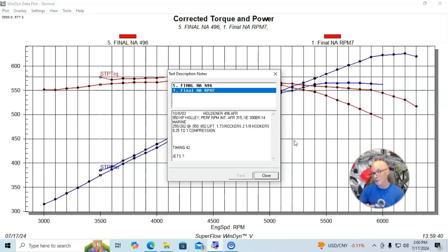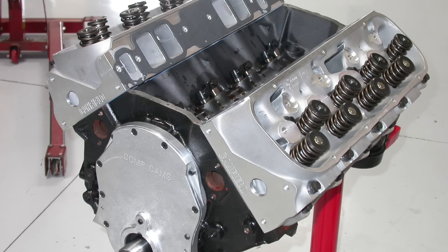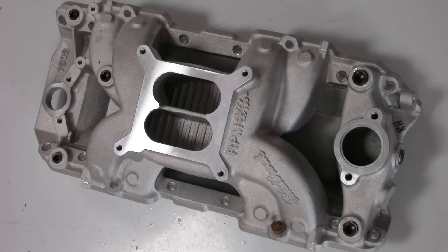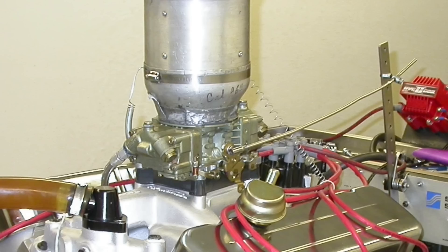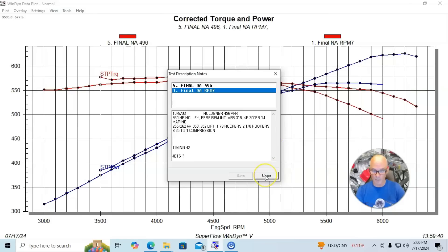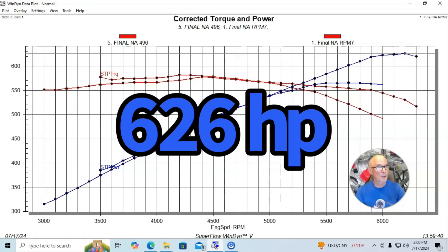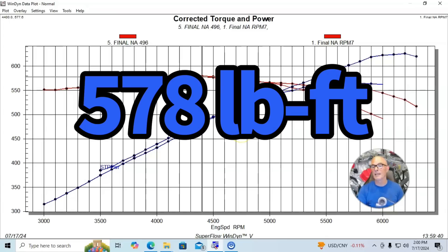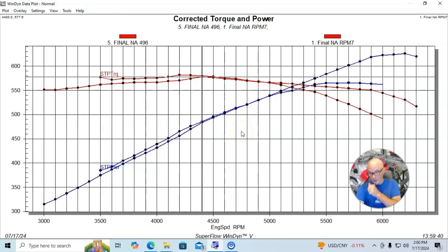We did change the cylinder heads. We stepped up from the 315 Canfield heads to an Airflow Research set of 315 heads. We retained the Performer RPM air gap intake manifold and the 950 Holley and the MSD distributor. We ran with 2 1/8 inch hooker long tube dyno headers. That combination produced a peak of 626 horsepower compared to 565 with the previous combination. Torque was a little bit higher on the previous combination, 580 something foot pounds versus 578 foot pounds.